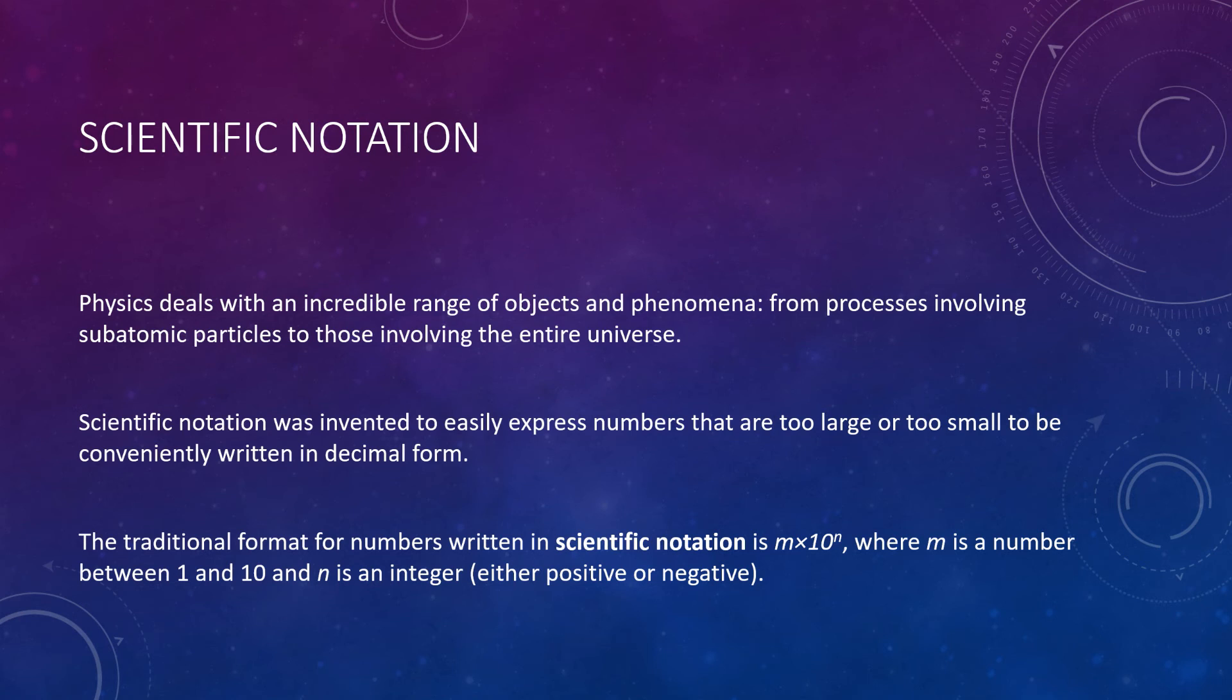Scientific notation was invented to easily express these large and small numbers by conveniently writing them in decimal form. The traditional format for numbers that are written in scientific notation is m times 10 raised to the nth power, where m is any number between 1 and 10, and n is some integer that is either positive or negative. So, the advantages of scientific notation become pretty clear. First of all, it's compact. Rather than writing out that huge number for the radius of a hydrogen atom, we can write it in the simple form m times 10 to the n. Additionally, it helps to articulate how many significant figures are actually present in your number, and it's a form that works with any number throughout the universe.